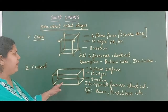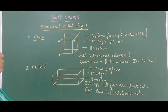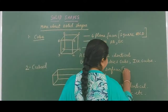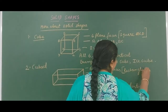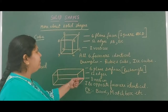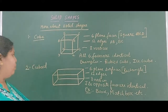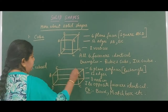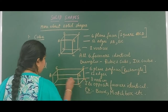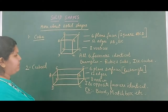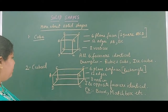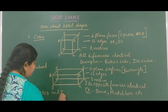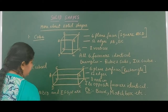Now if we look at a cuboid, the faces look like rectangles. A cuboid has 12 edges and 8 vertices. Opposite faces are always equal — for example, face ABCD and face EFGH are opposite and identical to each other.